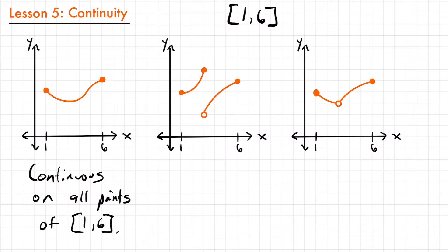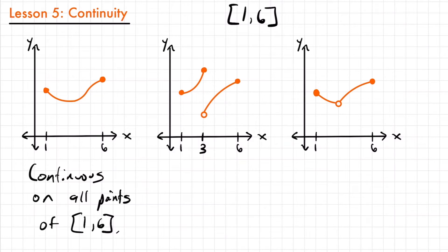Let's look at our second graph. We'll start at x equals one and follow it until we get to x equals six to see if we find any interruptions. Following from x equals one up to x equals three, so far so good. But now there's a gap — we have a jump. We go from y equals six and then jump down to y equals two. So right here at x equals three, we have an interruption where we were at one y value but now we're at another. We can conclude this function isn't going to be completely continuous on the interval.